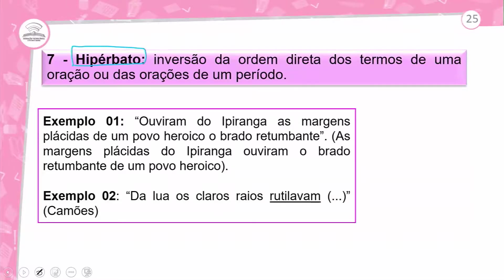E hipérbato? É a inversão da ordem direta dos termos de uma oração ou das orações de um período. Exemplo do Hino Nacional: 'Ouviram do Ipiranga as margens plácidas de um povo heróico o brado retumbante.' Na ordem direta seria: 'As margens plácidas do Ipiranga ouviram o brado retumbante de um povo heróico.' Segundo exemplo: 'Da lua, os claros raios rutilavam' — na ordem direta: 'Os claros raios da lua rutilavam.' O hipérbato inverte predicado antes do sujeito.